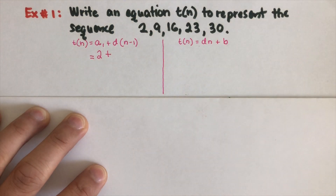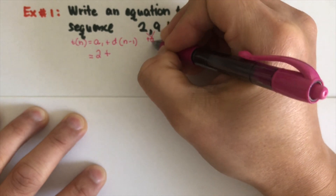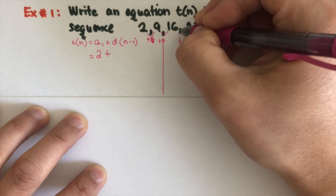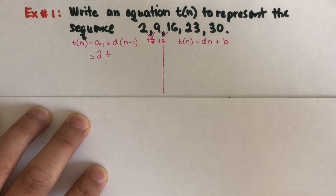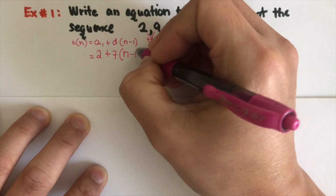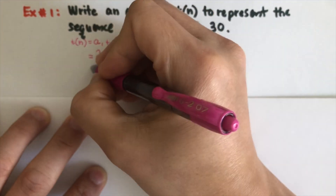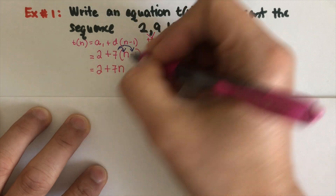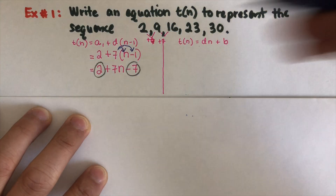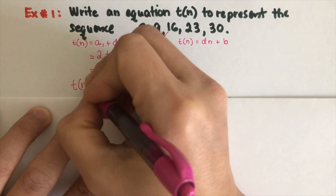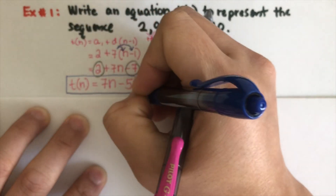The sequence is adding 7 each time: 2 plus 7 is 9, 9 plus 7 is 16, 16 plus 7 is 23. So our difference is 7. We get t of n equals 2 plus 7 times (n minus 1). Distributing the 7 gives 2 plus 7n minus 7. Combining like terms, 2 minus 7 is negative 5, so t of n equals 7n minus 5. That is the equation for t of n for this sequence.